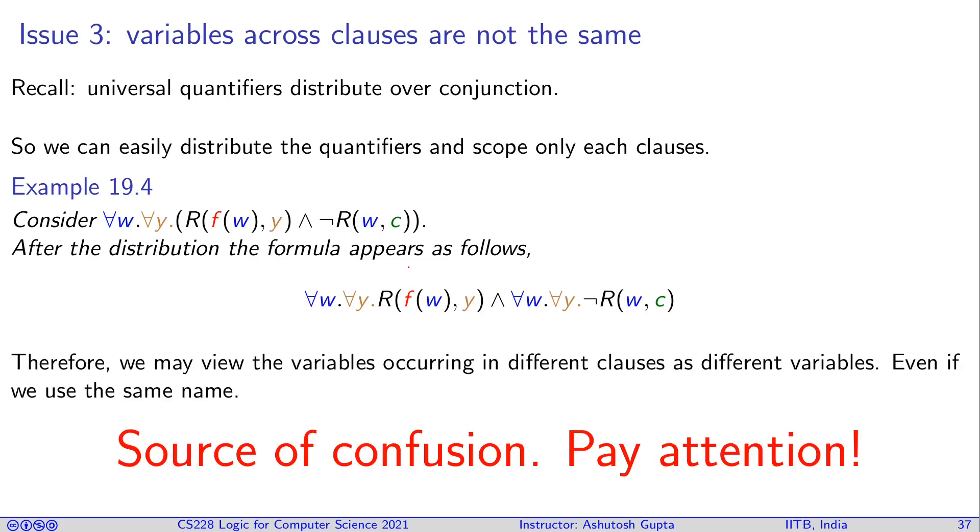So therefore we may view the variables occurring in different clauses as different variables, even if we use the same name, because if you each time you start writing different name, you run out of the name, whole notation becomes very cumbersome, human readability goes down. So therefore, for human readability, we use the same name, but algorithmically or when computers analyze these clauses, they treat them separately.